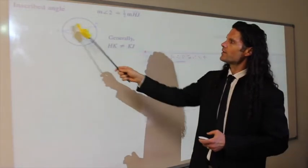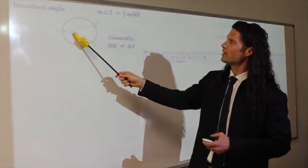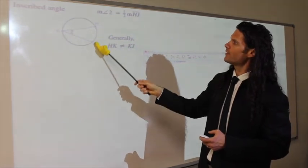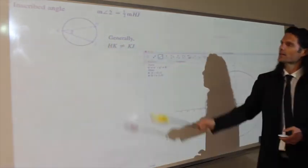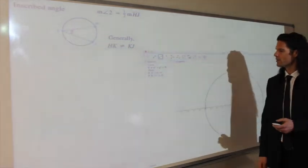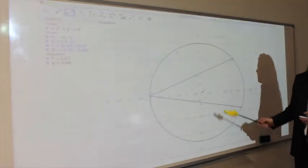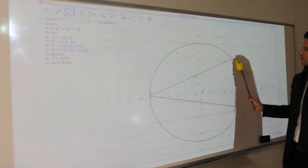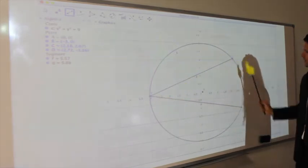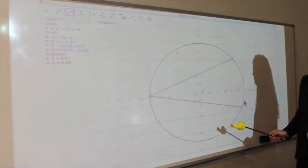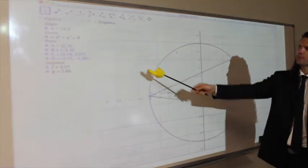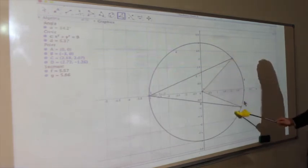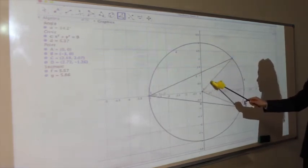Here we have two chords and an inscribed angle, and that angle is half of the opposite arc there. Generally these two chords are not equal. Starting with x squared plus y squared equals 9, so we have a radius of 3. We've got two chords and points on the circumference here. Then we measure this angle at 34.2 degrees and create a sector to measure this arc length here, which is going to be equal to that angle measure in the center.